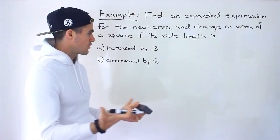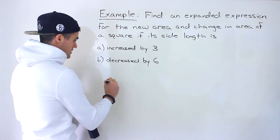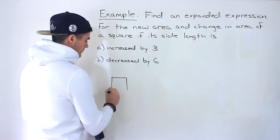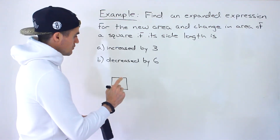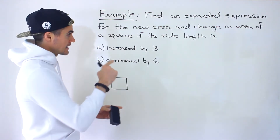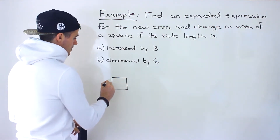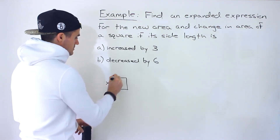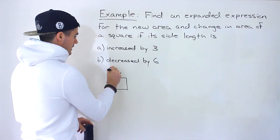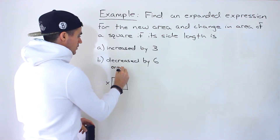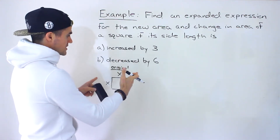We've done a couple of these problems already. In this particular case we have a square, and notice that we're not given the side length of the square — that's where the variable is going to come in. So let's call it x. This square has a side length of x, and this is the original square for both scenarios.